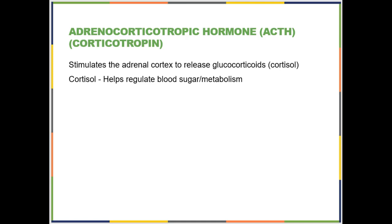First up is adrenocorticotropic hormone. You want to know that adrenocorticotropic hormone stimulates the adrenal cortex to release glucocorticoids. We will go over what glucocorticoids are and what they do later. For now, just know that the most notable glucocorticoid is cortisol, and that's what comes out of the adrenal cortex when ACTH hits it.